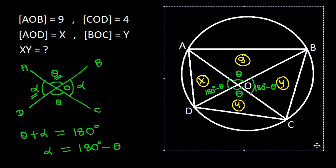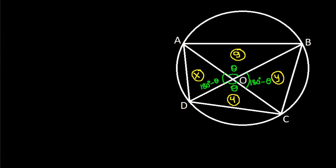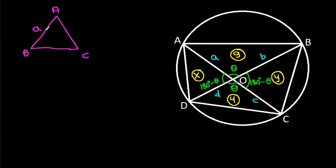Suppose AO is A, BO is B, CO is C, and DO is D. In any triangle, if two sides are A and B with included angle theta, then the area equals one-half times A times B times sin theta.